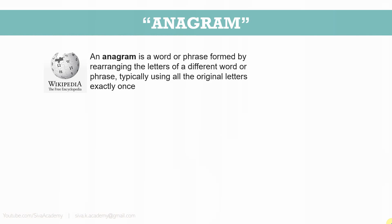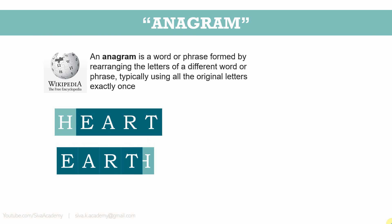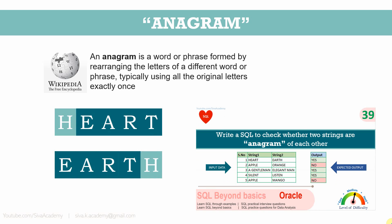Anagram is nothing but a word or phrase formed by rearranging the characters of another word. For example, if you have the word 'heart', you can form another word just by rearranging its characters. So in this case, these two words are said to be anagram of each other. In this video, I showed one method of implementation to check whether two strings are anagram of each other.